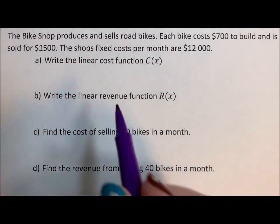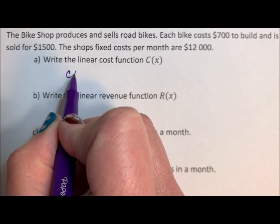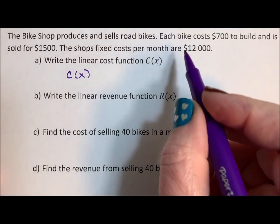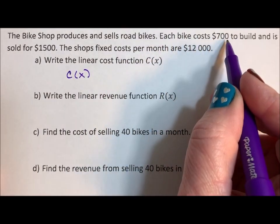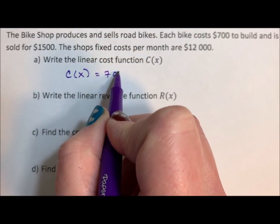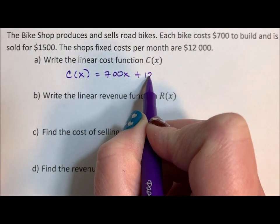Write a linear cost function. So the cost function includes the unit cost and the fixed cost. The unit cost is how much it costs to build a bike and the fixed cost. So it's $700 per bike plus the $12,000. C(x) = 700x + 12000.